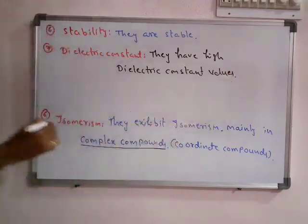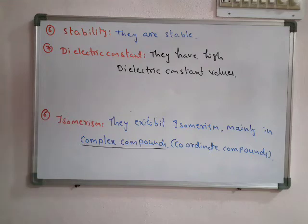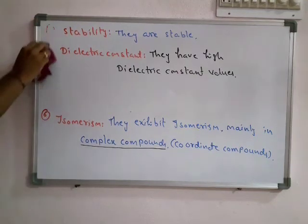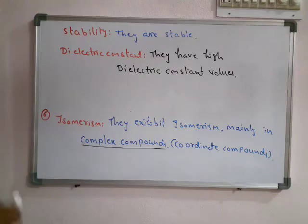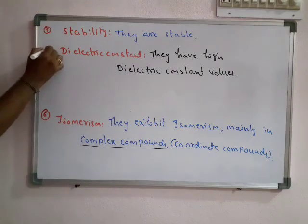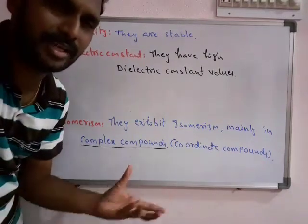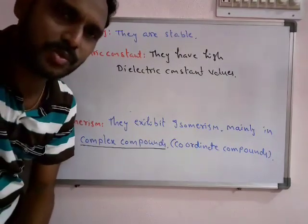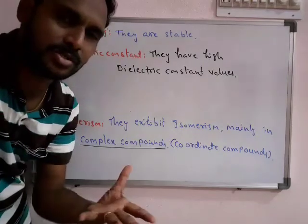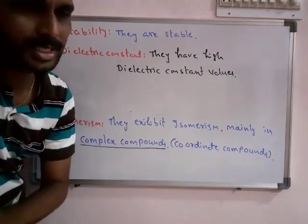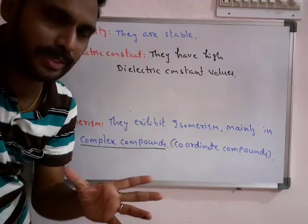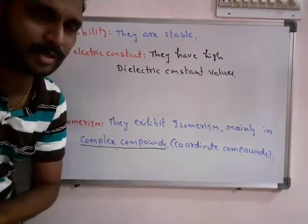These are the main properties of coordinate compounds. We must know about these as some exam questions are based on them. In the next class, we will compare ionic bonds and covalent bonds.